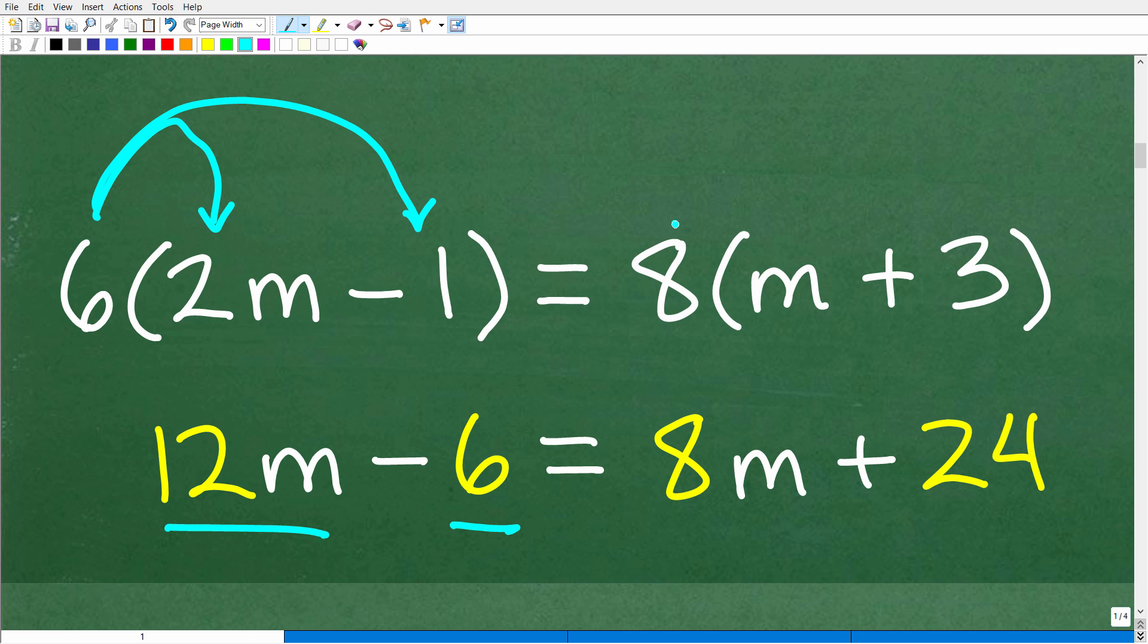So over here, we have this eight, this gets multiplied to M, so that's 8M, and then this eight gets multiplied to this three, which of course is 24, and that sign stays the same right there.